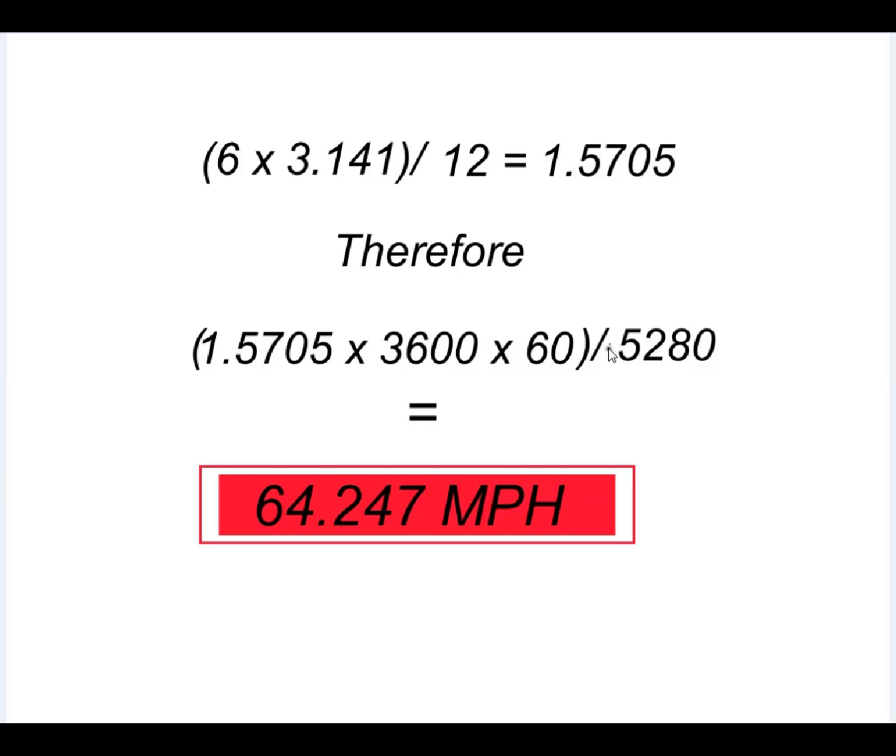Take that number and divide it by the foot equivalent of a mile, which is 5,280. And you're going to find that your cutter grinder wheel on its periphery is traveling at a ripping 64.247 miles per hour.